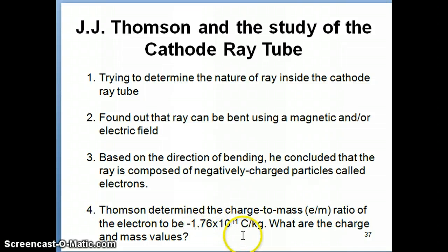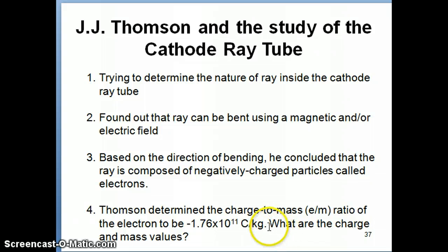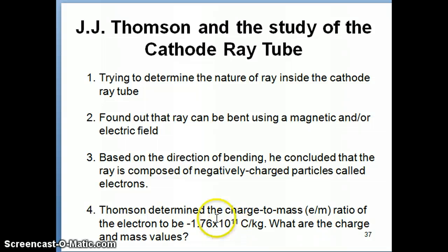That value is negative 1.76 times 10 to the 11 Coulombs per kilogram — Coulomb being the unit for charge. If you look at this number, it's a pretty big number, which implies something about the electron: it must have a relatively small mass. Since mass is in the denominator of this ratio, the electron must be very light, yet its charge is fairly large relative to its mass. So the question becomes: what exactly is the charge and what exactly is the mass of an electron? We can't use the charge-to-mass ratio alone to determine those two properties individually.